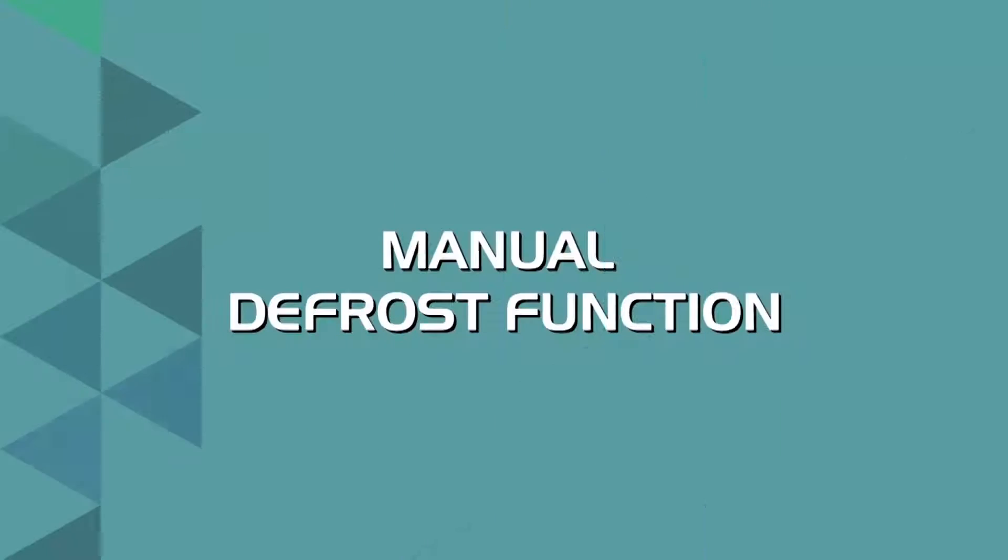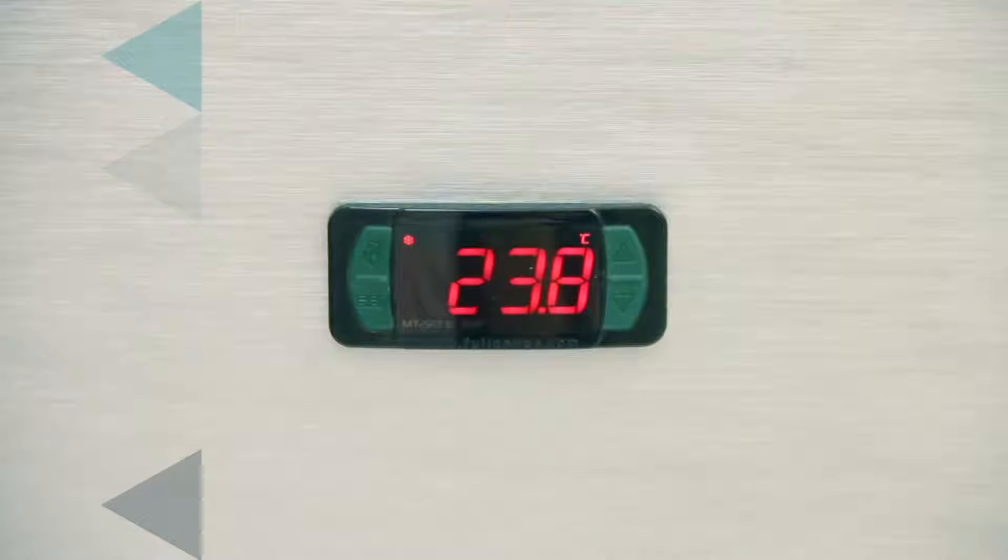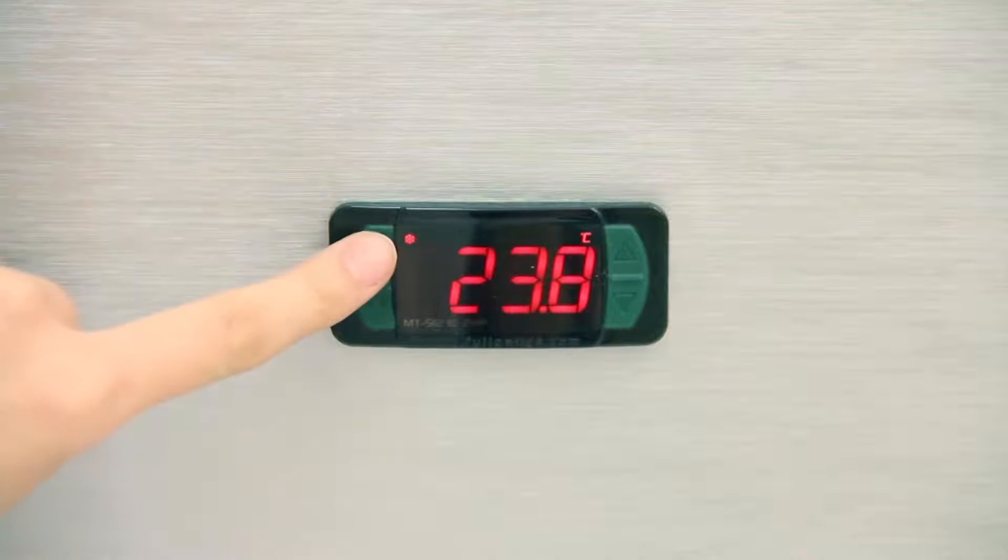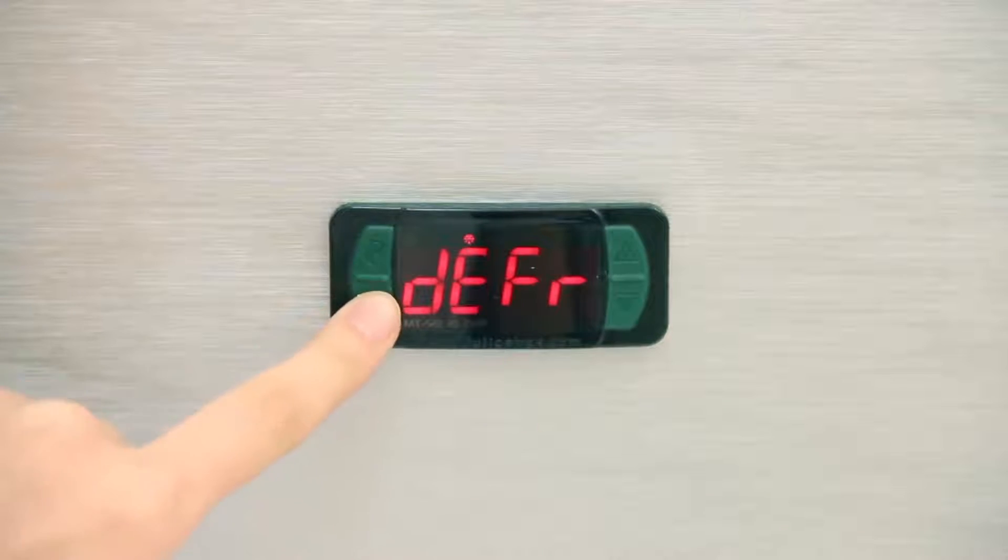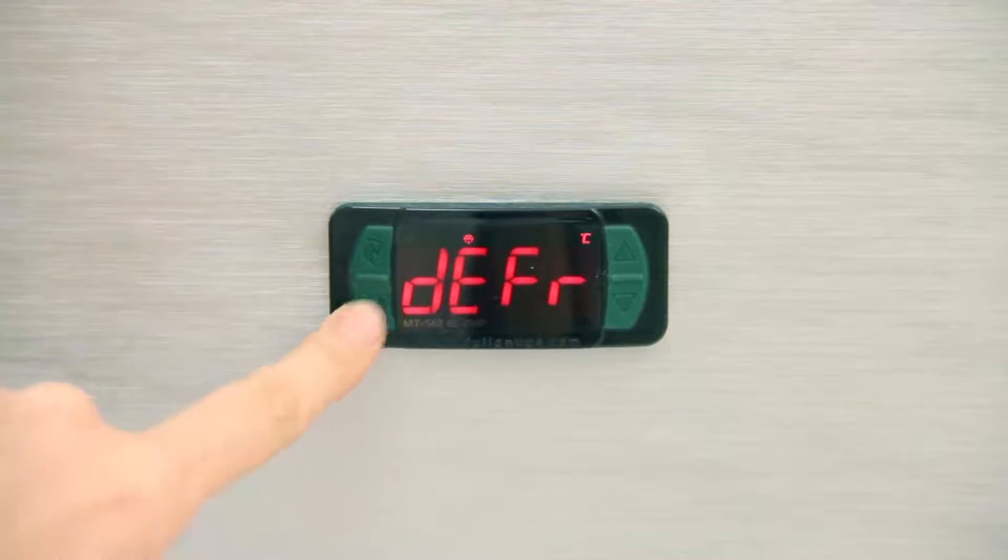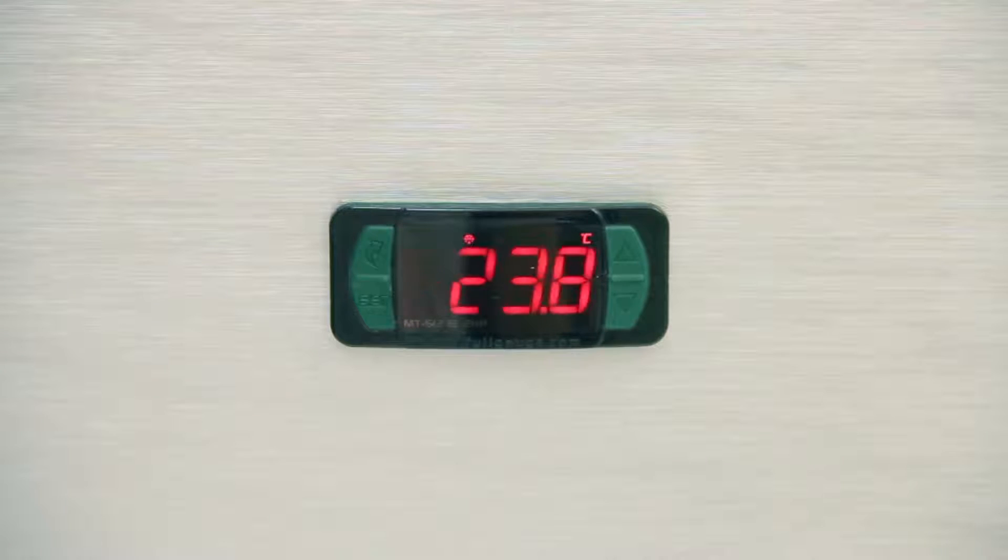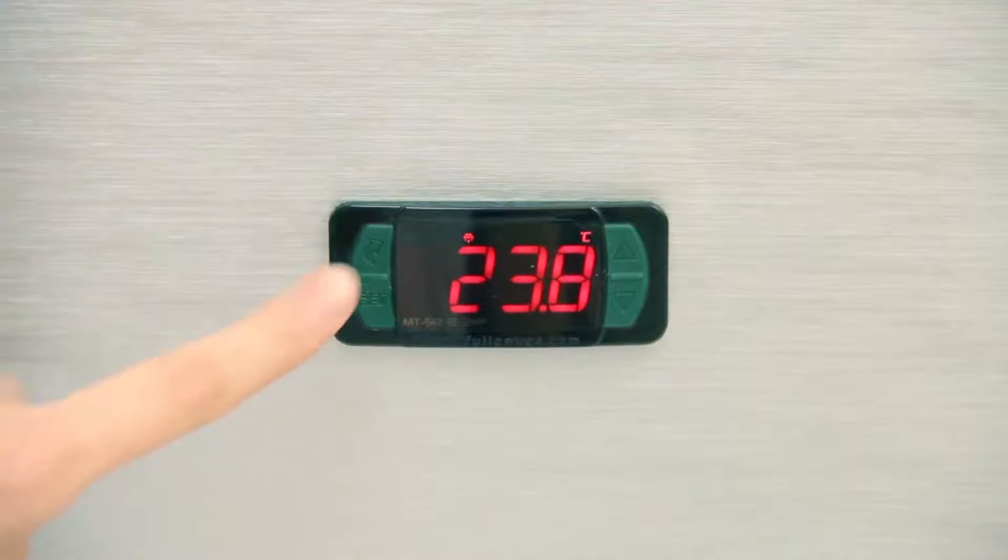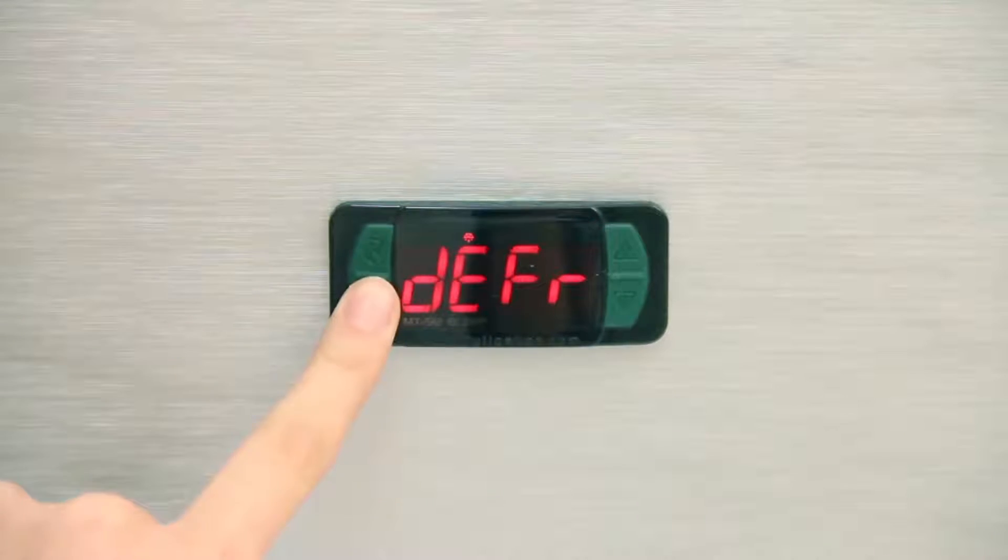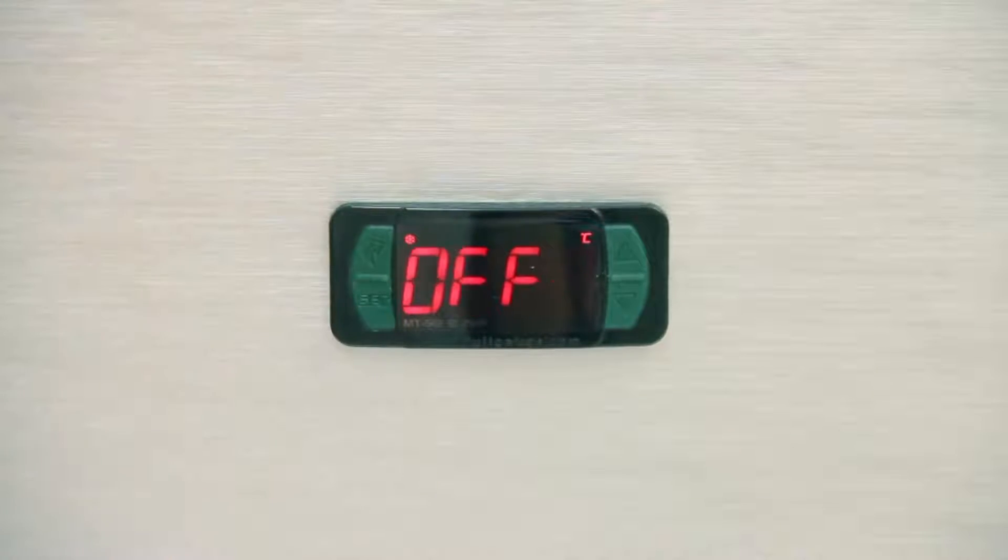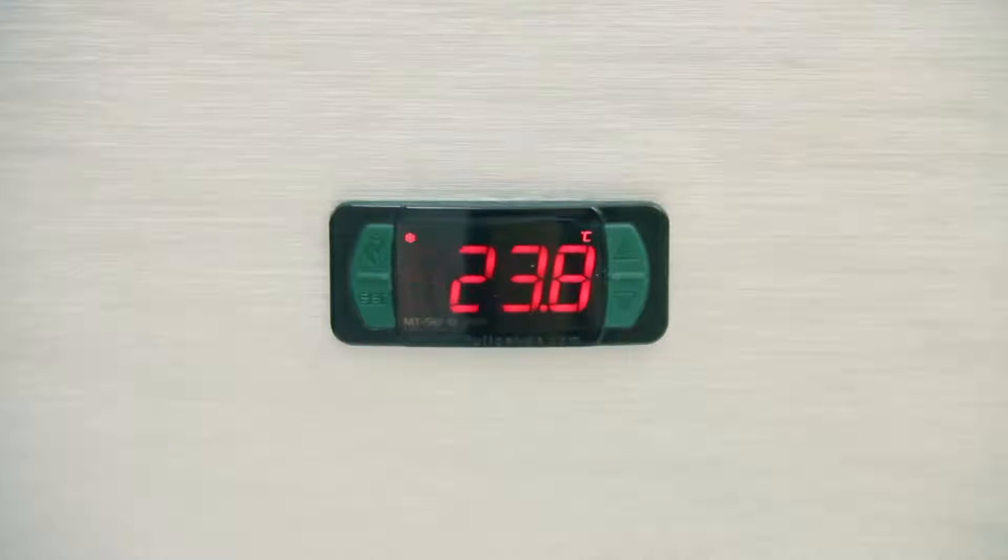Manual defrost function. The manual defrost is achieved by compressor shutdown. Access the function with the FlatTech key. Press set. The cooling icon will turn off and the defrost icon will be shown. To reactivate cooling, repeat this procedure. The defrost icon will turn off and cooling will be shown.